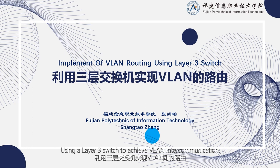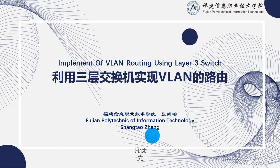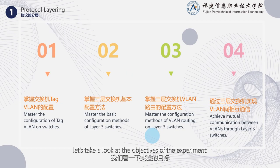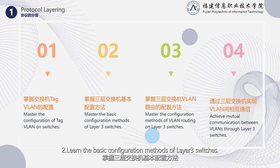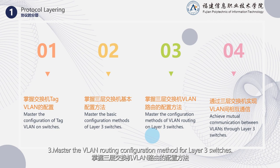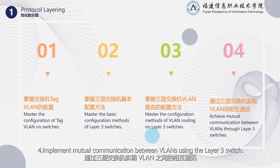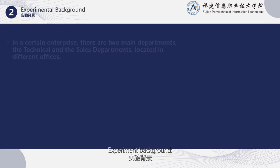Using a Layer 3 switch to achieve VLAN intercommunication. First, let's take a look at the objectives of the experiment. One: master the switch's TAG VLAN configuration. Two: learn the basic configuration methods of Layer 3 switches. Three: master the VLAN routing configuration method for Layer 3 switches. Four: implement mutual communication between VLANs using the Layer 3 switch.